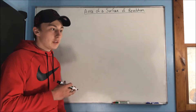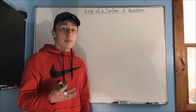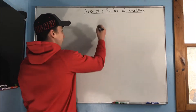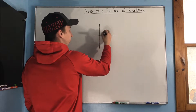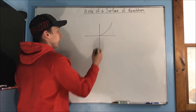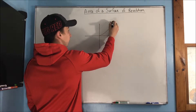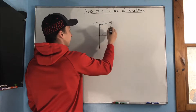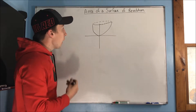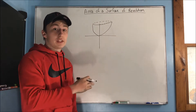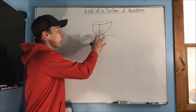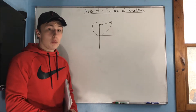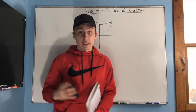In the past couple videos we've talked about arc length, and now we're going to build off of that when talking about the area of a surface of revolution. We're going to take a curve — let's say y equals x squared — and revolve it around an axis, say the y-axis, to get a solid. We want to find the surface area of this solid using a formula that's pretty similar to the arc length formula.